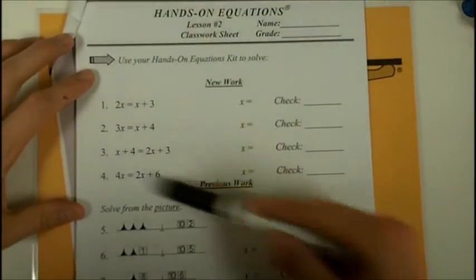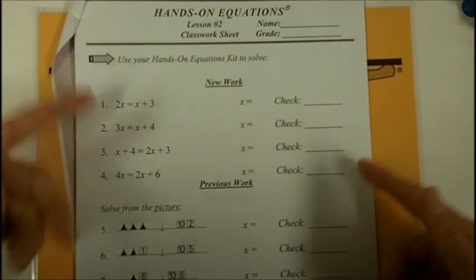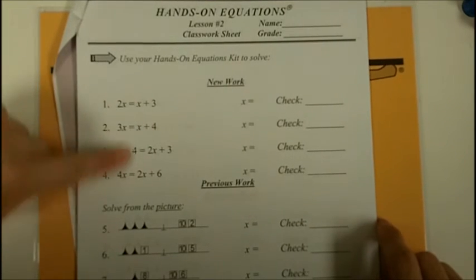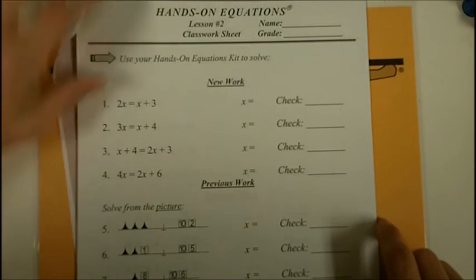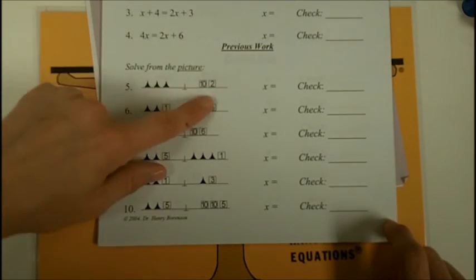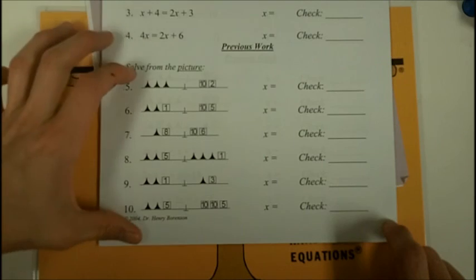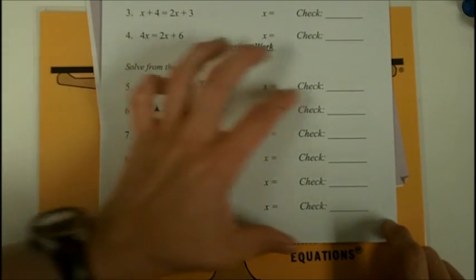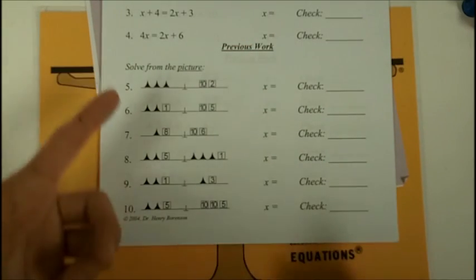You are now ready to start with lesson two of your hands-on equations packet. The first four problems that you see here are going to be the new kind, how they're written using the x instead of the picture of the pawn. And then down at the bottom you will see some review that uses what we already know and continues to practice it. Good luck.